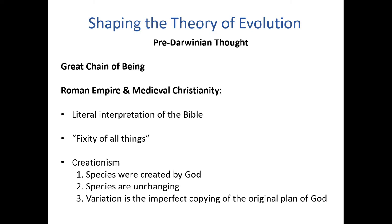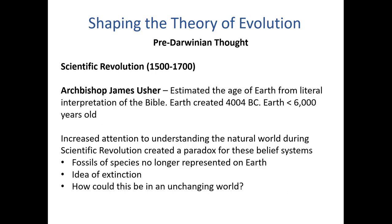This was part of the thinking in both the Roman Empire and in medieval Christianity that basically came before any evolutionary thought. Then around 1500 to 1700 was the time of the scientific revolution. During this time, there was an archbishop named James Usher who used a literal interpretation of the Bible to try to estimate the age of the earth. Through some interesting math, he came up with the idea that the earth was created about 4,004 years before the coming of Christ, which would make the earth at the time less than 6,000 years old.